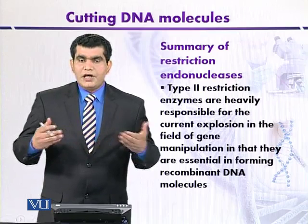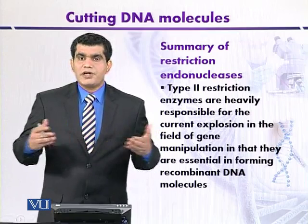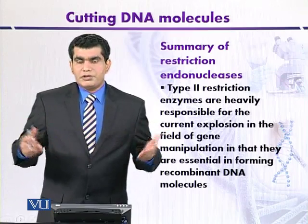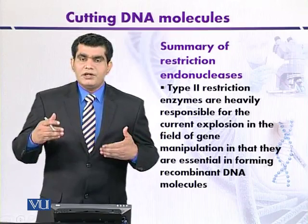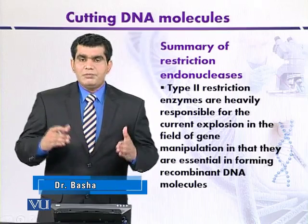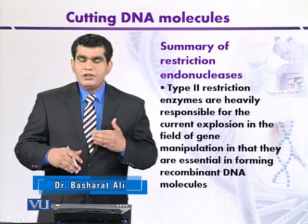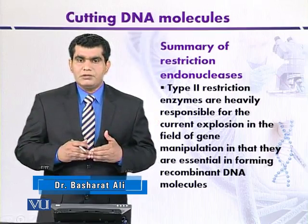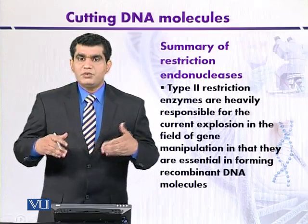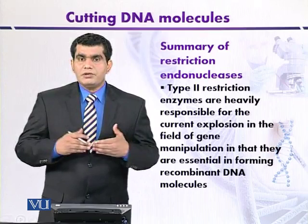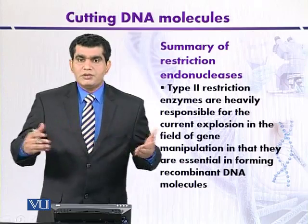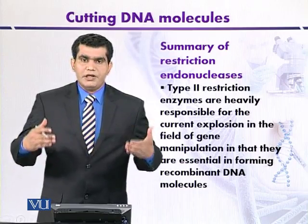We also have the idea that restriction enzymes may be of a variety of types, but not all enzymes are useful in the process of gene manipulation. The reason is that most restriction enzymes will randomly break the DNA. However, Type 2 restriction enzymes are very well known and are valuable in the process of gene manipulation. They are mostly used to create artificially recombinant DNA molecules.